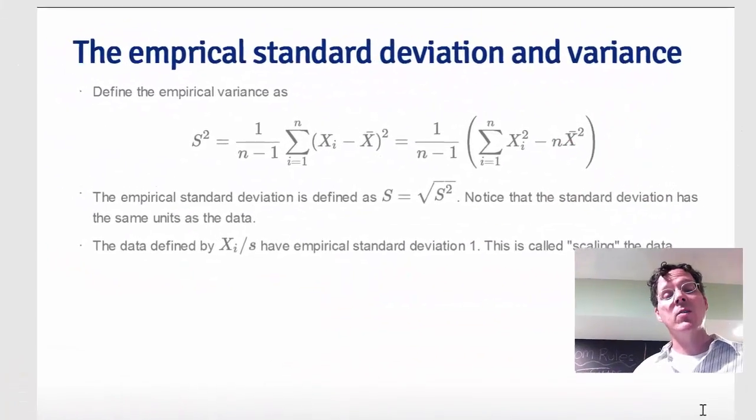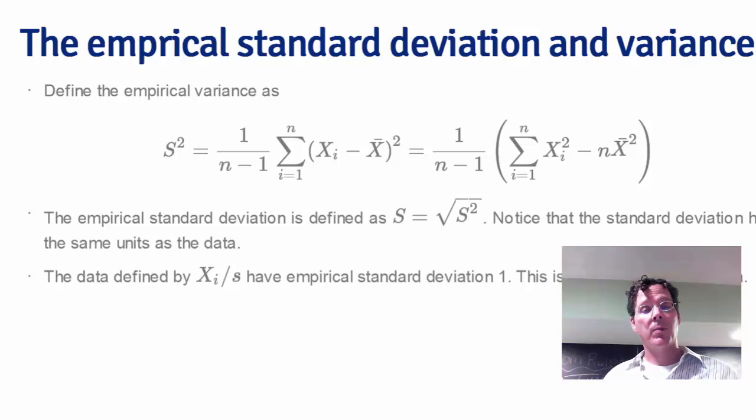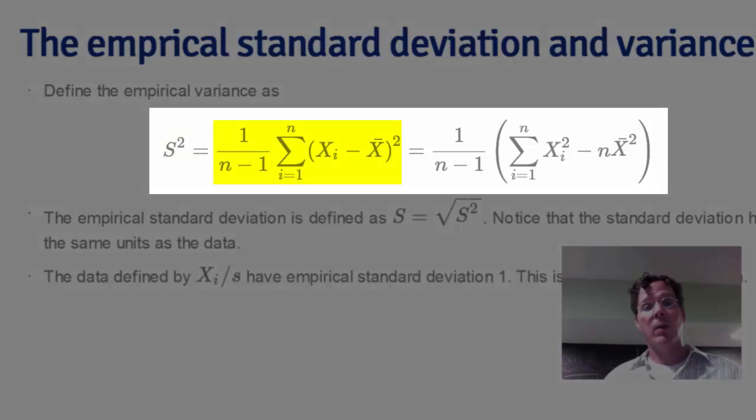Since we talked about means, let's talk about variances. The variance is usually denoted by s², and I give the formula right here: 1 over n minus 1, summation (xᵢ - x̄)². This is nothing other than basically the average squared deviation of the observations around the mean. There's a shortcut formula which I give over here.